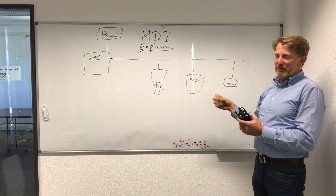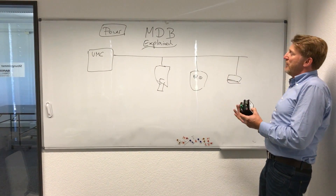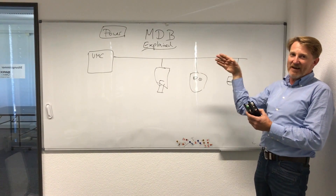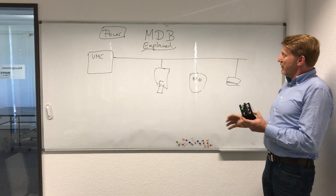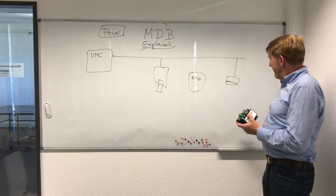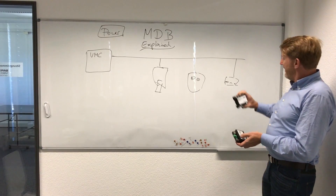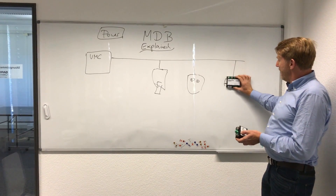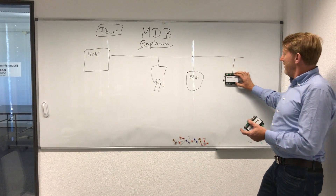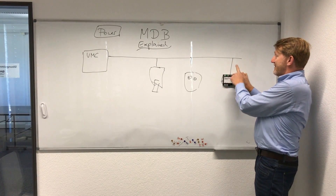That means we want to have a mobile payment system, or any kind of system where we can tell the machine: yes, I have credit. How do I do that? Well, I have to replace one of these slaves. So instead of taking a credit card reader, I take the MDB-USB interface from Keevix again, which in this case works as a slave.